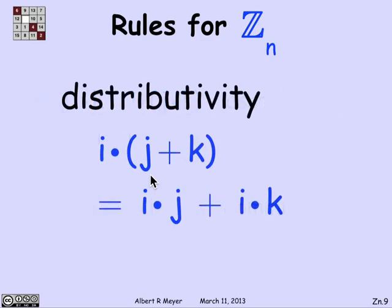Finally, there's an operation that connects addition and multiplication called distributivity, namely i times j plus k is ij plus ik. As you well know from ordinary arithmetic, and this rule works fine for remainders and working in Z_n.